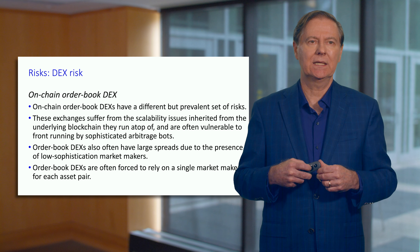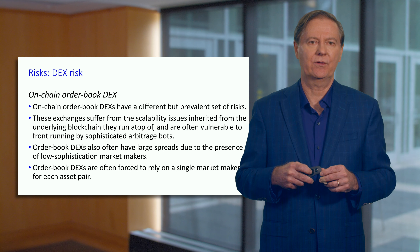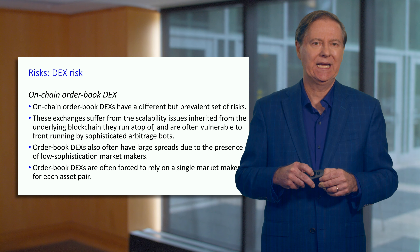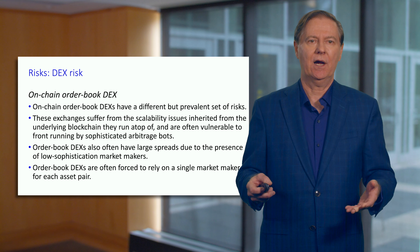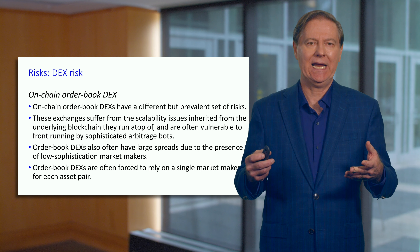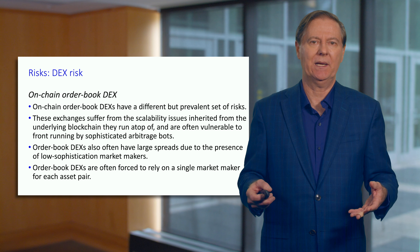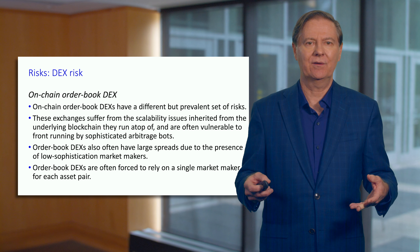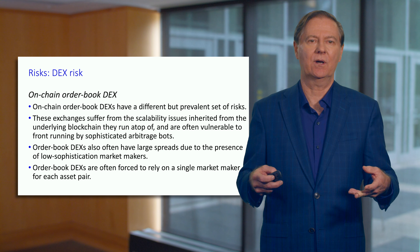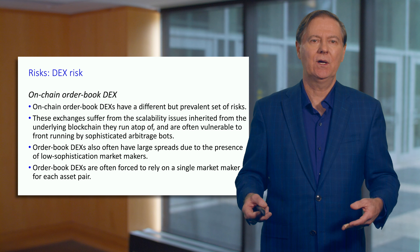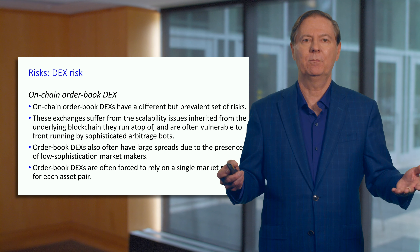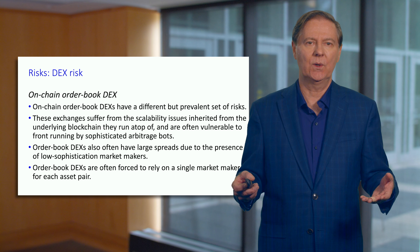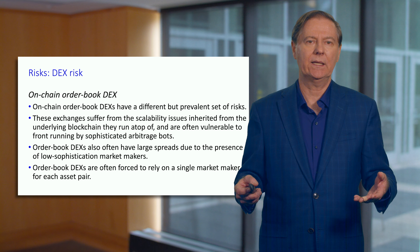Having an on-chain order book doesn't make a lot of sense today. Given the cost of gas, having something on-chain is just too expensive, and when it's too expensive there won't be sufficient liquidity. In the future, when we move to Ethereum 2.0, the on-chain order book becomes much more reasonable because the cost of on-chain transactions will be greatly decreased.